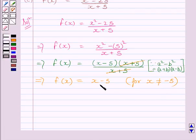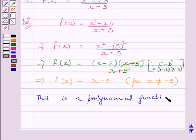Now, clearly, we can see, this is a polynomial function and polynomial function is continuous at every real number. So, we can write, this is a polynomial function. And hence, continuous at every real number except for x is equal to minus 5.